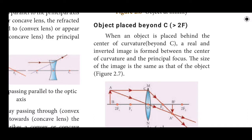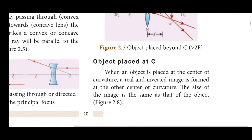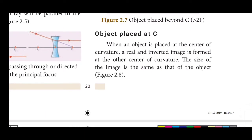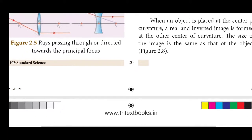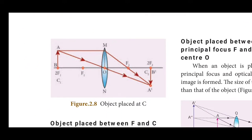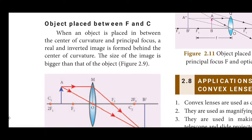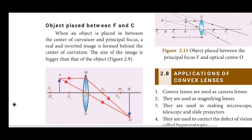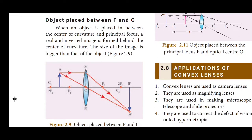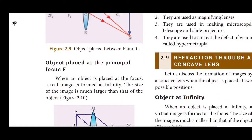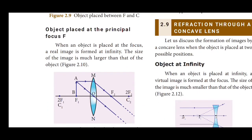For a convex lens, when the object is at infinity, the image is real and inverted and forms at the principal focus. When the object is at the center of curvature, the image is real, inverted, and the same size. When the object is beyond the center of curvature, the image is real, inverted, and diminished.